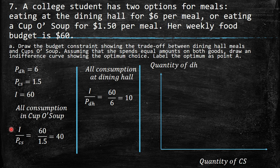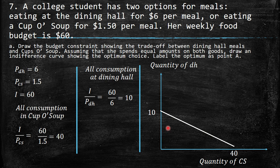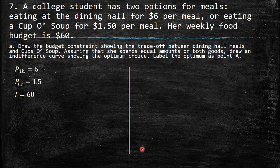In order to represent the budget constraint, we need to label the axes — quantity of dining hall and quantity of soup. Here is the maximum point of 10 for dining hall, here is the maximum point of 40 for soup, and this line is the budget constraint. Remember, this line shows all the bundles where you spend exactly $60. If you are below this line, you spend less than $60; if you are above this budget constraint, you spend more than $60.